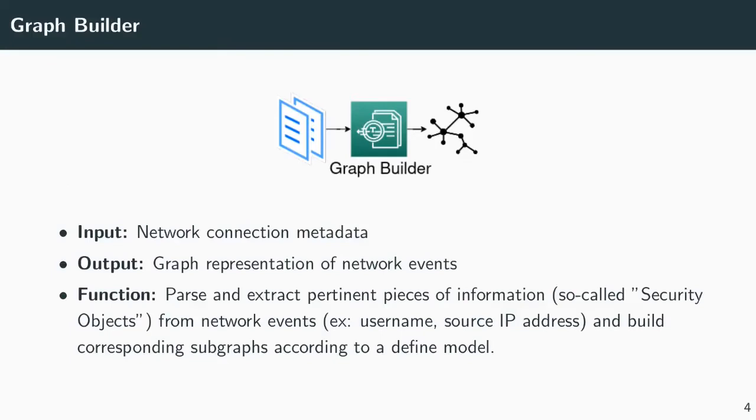The first module, the graph builder, takes network events and generates a graph representation. It parses your data and extracts all event pieces of information that we call security objects. These security objects become the nodes of our graph and we link nodes that belong to the same event with timestamped edges.